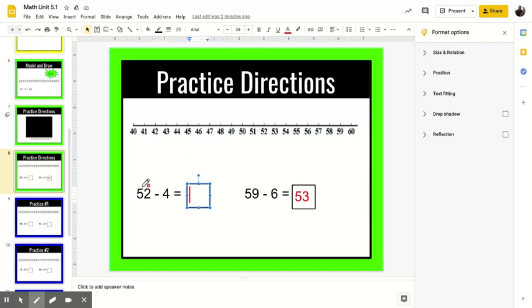So in the subtraction problem 52 minus 4, you're gonna start right here at 52 and you're gonna count four jumps backwards and see where you land.